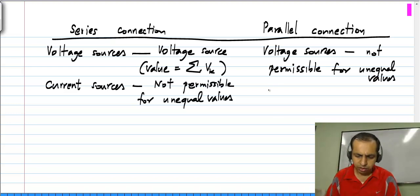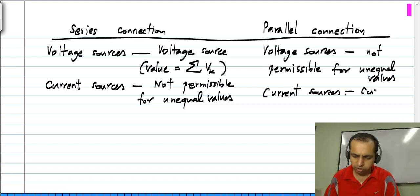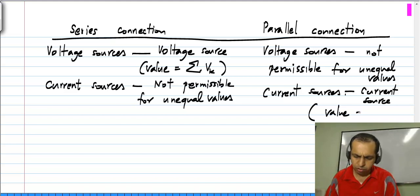And if you have a parallel connection of current sources, then the result is also a current source whose value is the sum of the individual current sources.